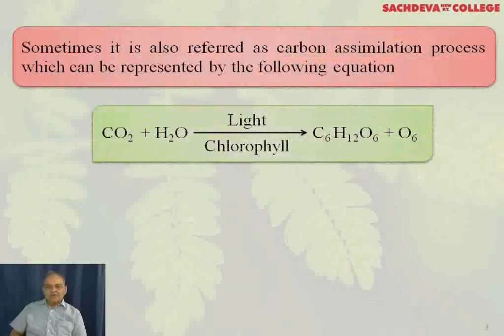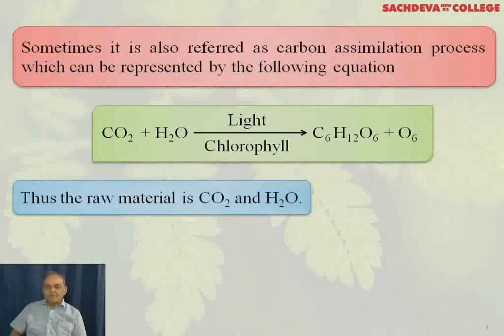CO2 plus water, with light and chlorophyll, produces carbohydrate and oxygen. Thus, the raw materials are carbon dioxide and water.